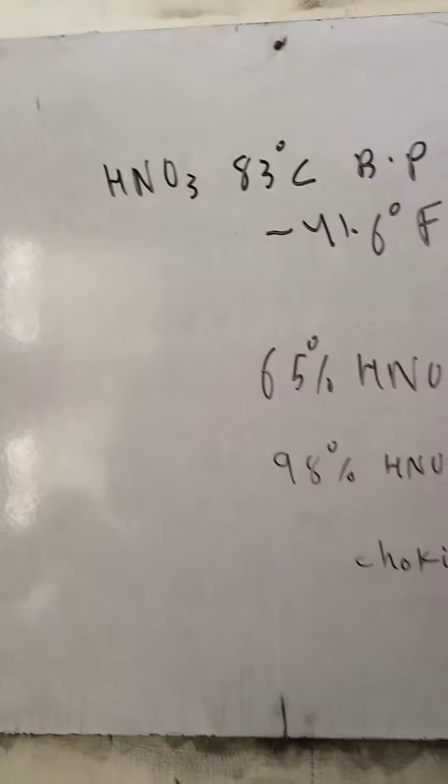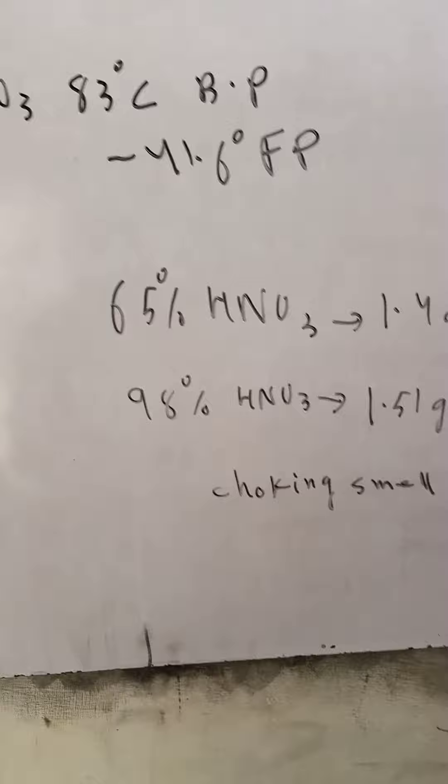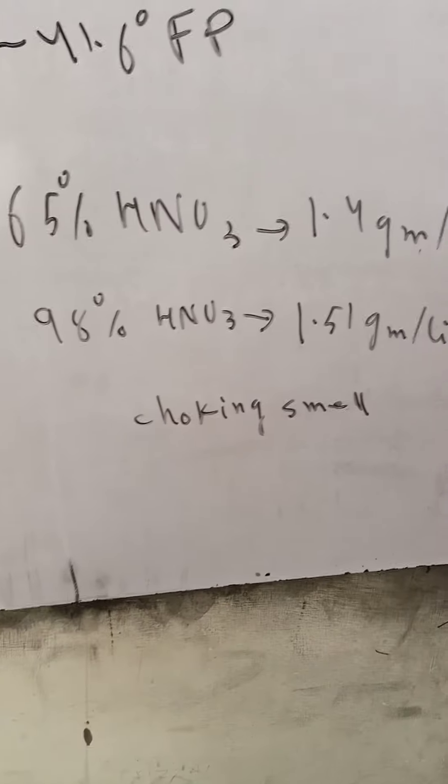Look, what is the nitric acid boiling point? 83 degrees. Freezing point minus 41.6 degrees.